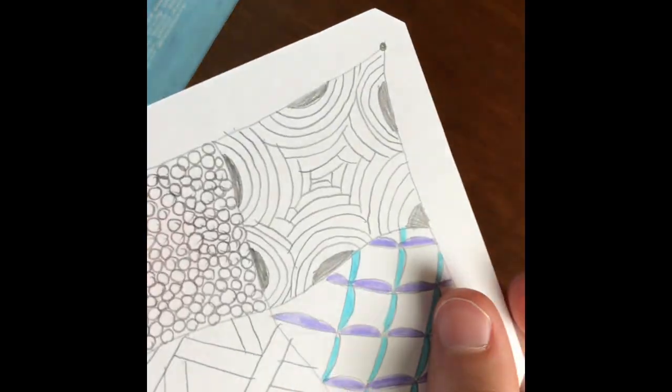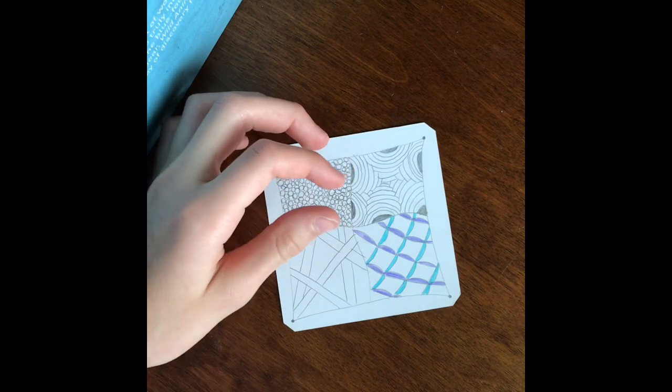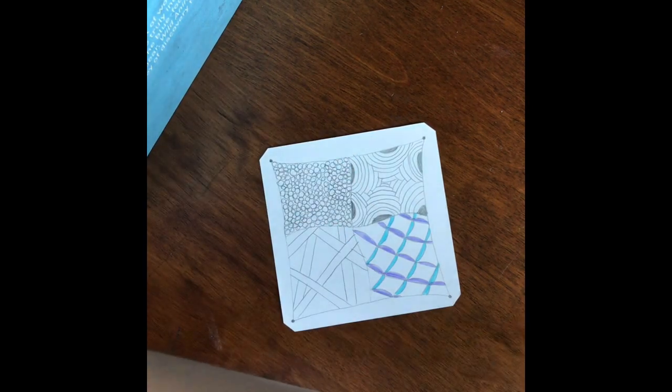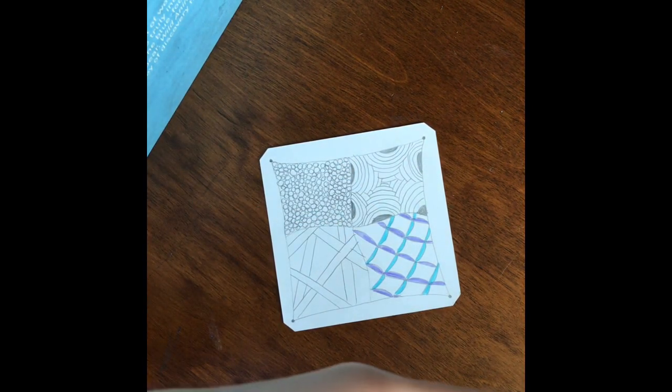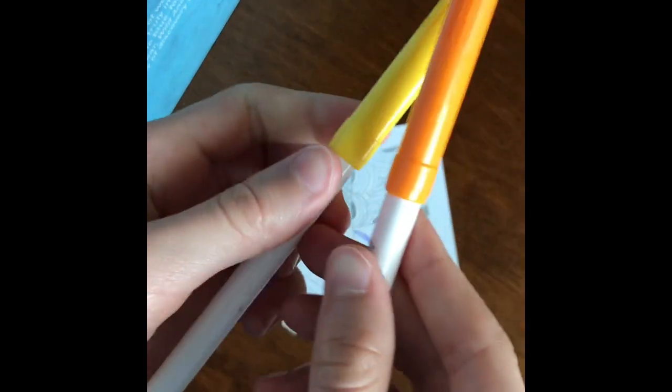For the crescent moons, I think I'm going to use, since I'm kind of reminded of the color yellow with the moon, I'm going to use these two.